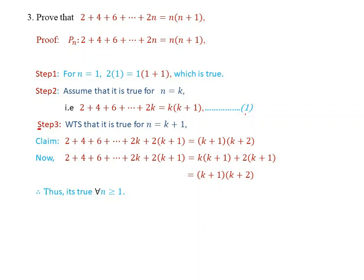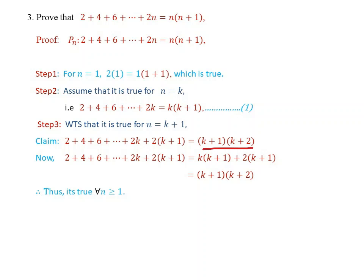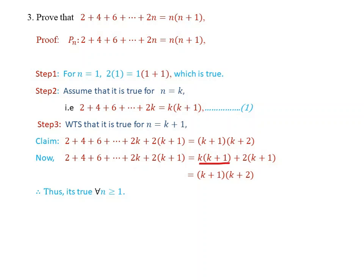Step 3: We want to show it is true for n equal to k plus 1. Starting from the left-hand side, 2 plus 4 plus ... plus 2k plus 2(k+1). Using our assumption, the sum up to 2k equals k(k+1), so we add 2(k+1) to get k(k+1) plus 2(k+1). Taking (k+1) as common factor, we obtain (k+1)(k+2), which is the required result.